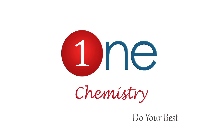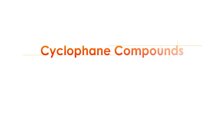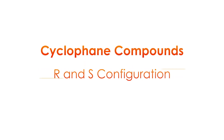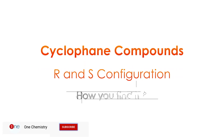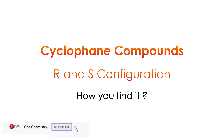Welcome to One Chemistry — always try to do your best. Now we will see cyclopentane compounds and their R/S configuration. We will derive it from plane chirality and see how we can find it step by step. Stay tuned.